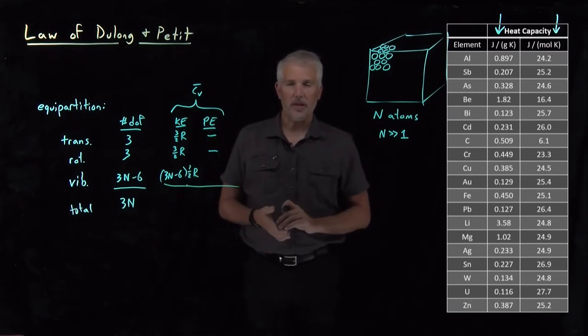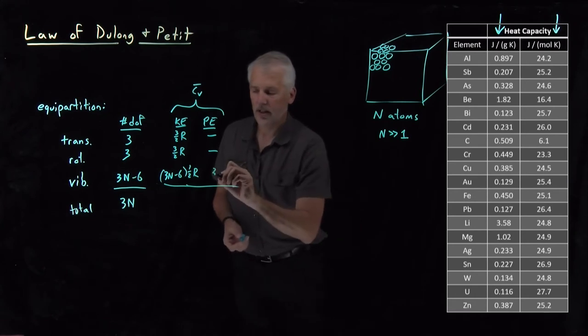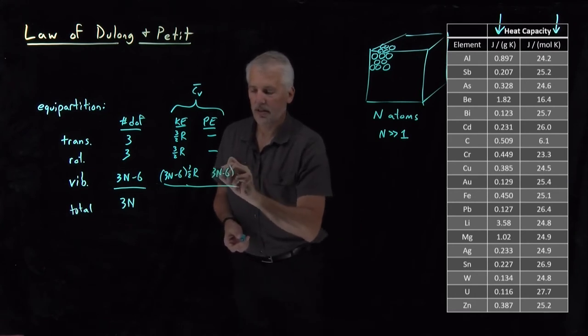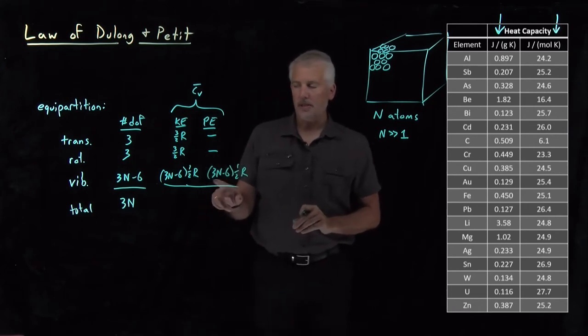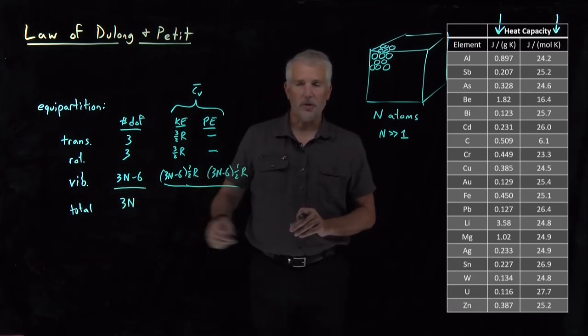But if we treat these vibrations as harmonic oscillator degrees of freedom, then they do have a potential energy that is quadratic. So I get another 3N minus 6 factors of one half R contributing to the heat capacity from the potential energy of these vibrational degrees of freedom.